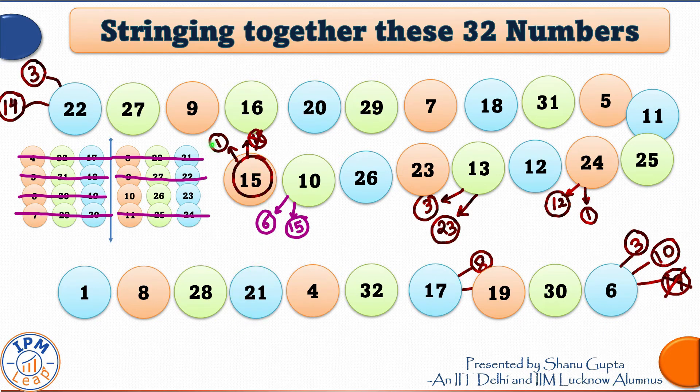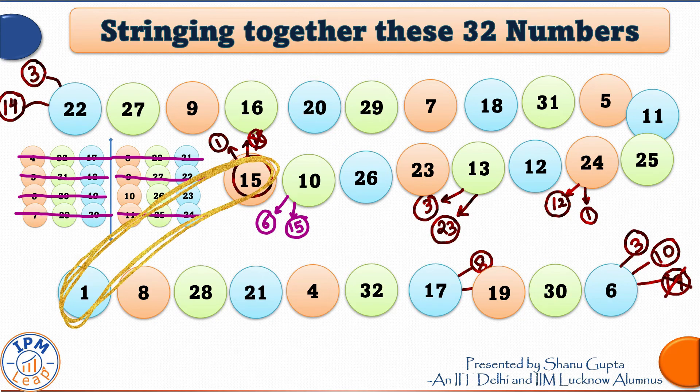And 1 is already the starting point of our second string. So, let us join these two strings at these two ends. Join the numbers 15 and 1. Now, I have 29 numbers accounted for already.